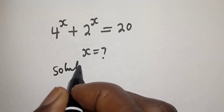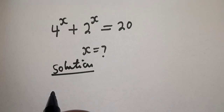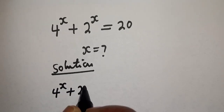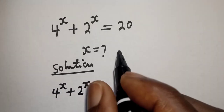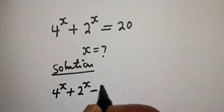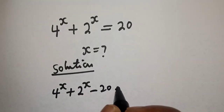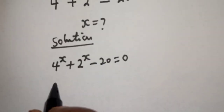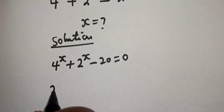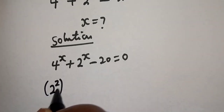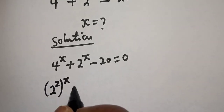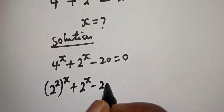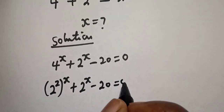Solution. We have 4 raised to power s plus 2 raised to power s minus 20 is equal to 0. Now, 4 raised to power s can be written as 2 squared raised to power s, plus 2 raised to power s minus 20 is equal to 0.